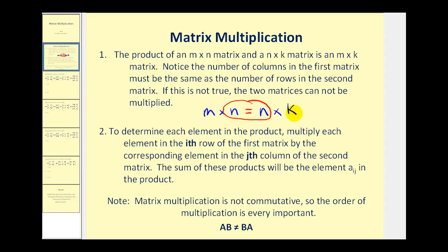Number two: to determine each element in the product, we will multiply each element in the i-th row of the first matrix by the corresponding element in the j-th column of the second matrix. Then we'll sum these products and that will be the element a sub i j. And lastly, matrix multiplication is not commutative, so it's very important that we pay attention to the order of the multiplication.